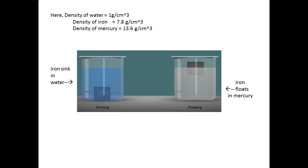The density of water is equal to 1 gram per centimeter cube, the density of iron is 7.8 gram per centimeter cube, while the density of mercury is 13.6 gram per centimeter cube. In the first diagram, you can see the iron piece at the bottom inside the water, because the density of iron is more than the density of water. In the second diagram, iron floats because that liquid is mercury, and the density of mercury is much more than the density of iron.